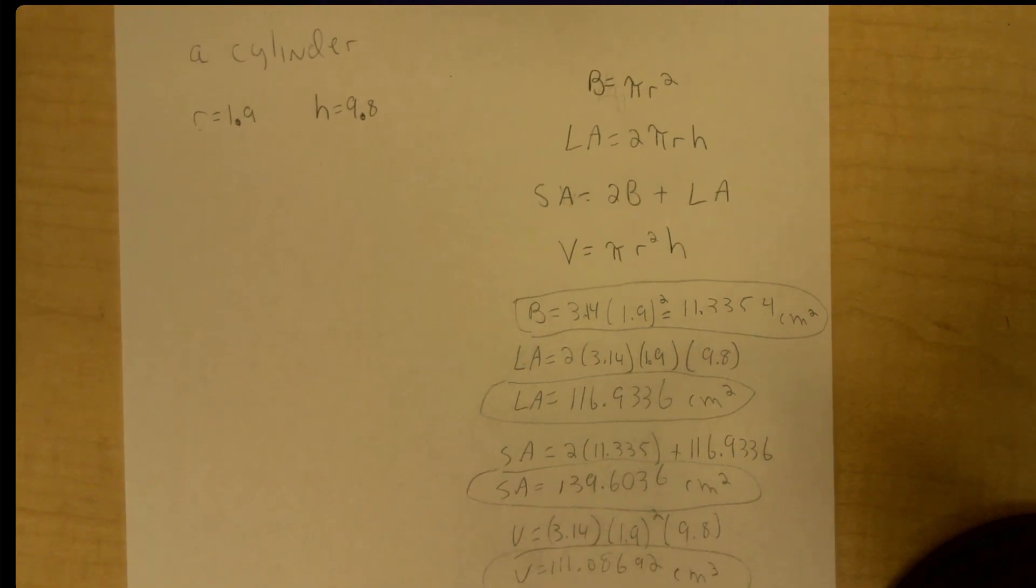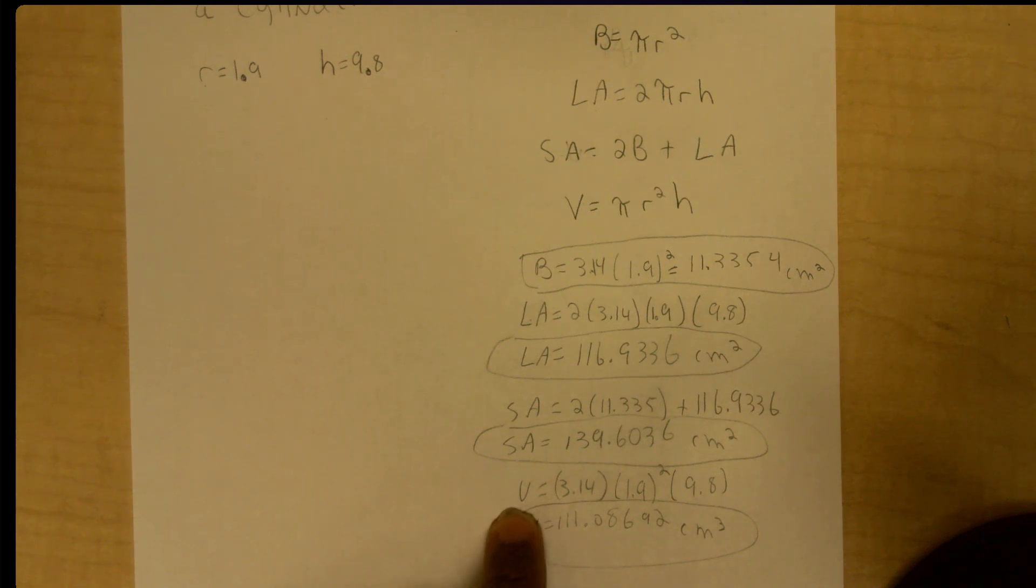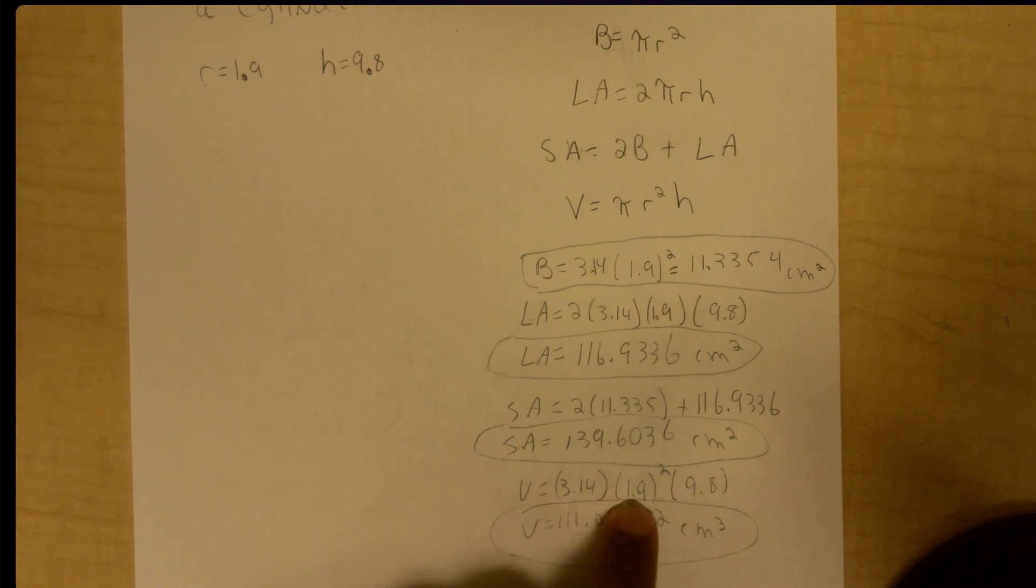Then I went ahead and found my volume, which is pi r squared times h. So pi r squared times h, and that gives me my volume in cubic centimeters.